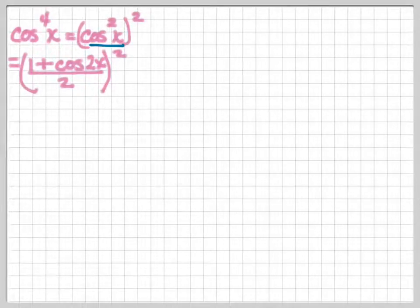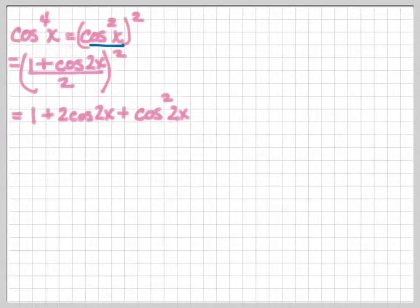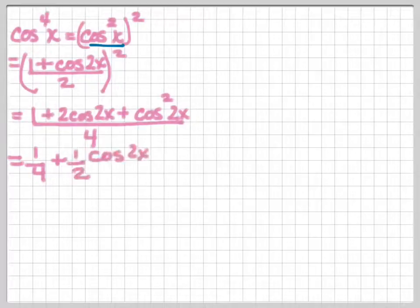Now remember what we've talked about in the last few days about binomial expansion. So the numerator will become 1 plus 2 cosine 2x plus cosine squared 2x, and the denominator will be 4. I'm going to break these apart. I'm going to make it 1 fourth plus 1 half cosine 2x, because I have 2 over 4 is 1 over 2, plus 1 fourth cosine squared 2x.